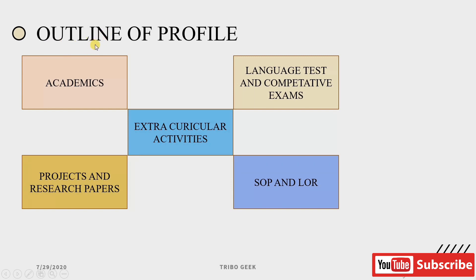I have designed the outline of the profile with five major features: first, academics; second, language tests and competitive exams; third, projects and research papers; fourth, SOP and LOR — that is, Statement of Purpose and Letter of Recommendation; and fifth, extracurricular activities. Let's go through each one by one.